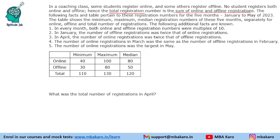The table shows the minimum, maximum, and median registration numbers of these 5 months, separately for online, offline, and total number of registrations. The following additional facts are also known to us. Based on these facts, we need to find out what the number of registrations in each of the months are.